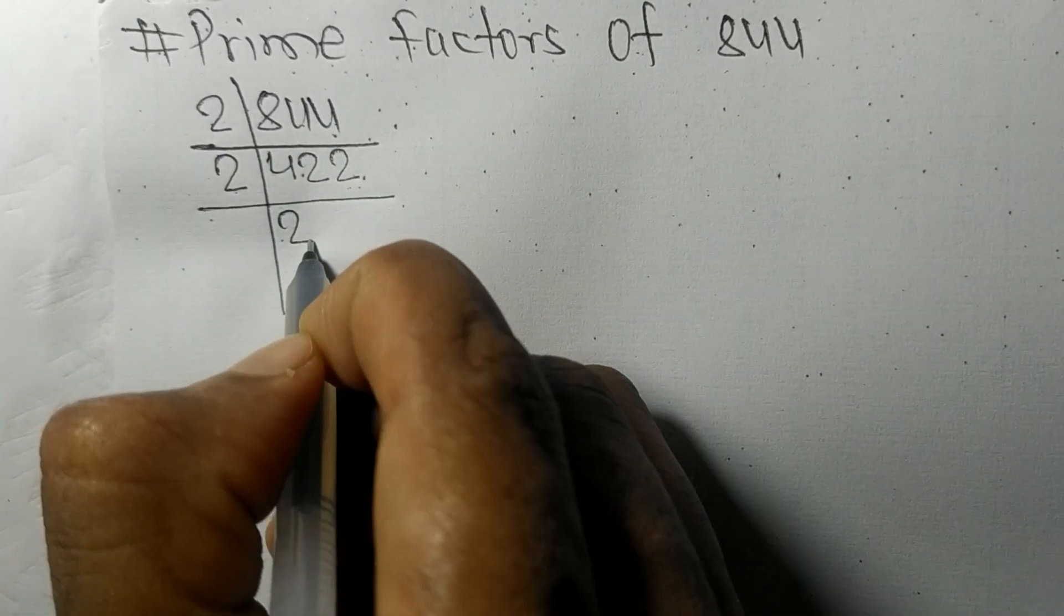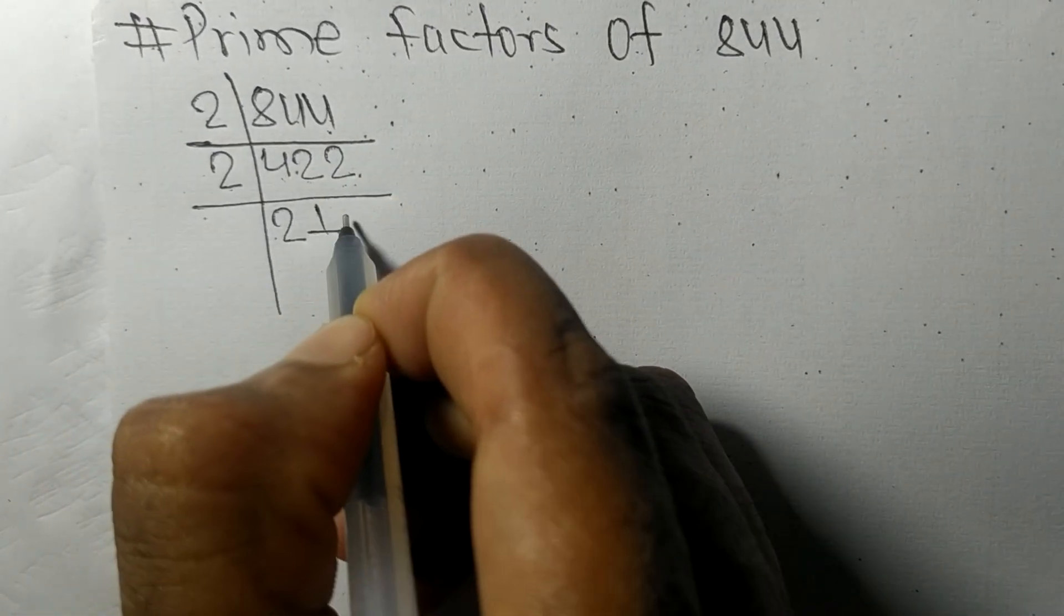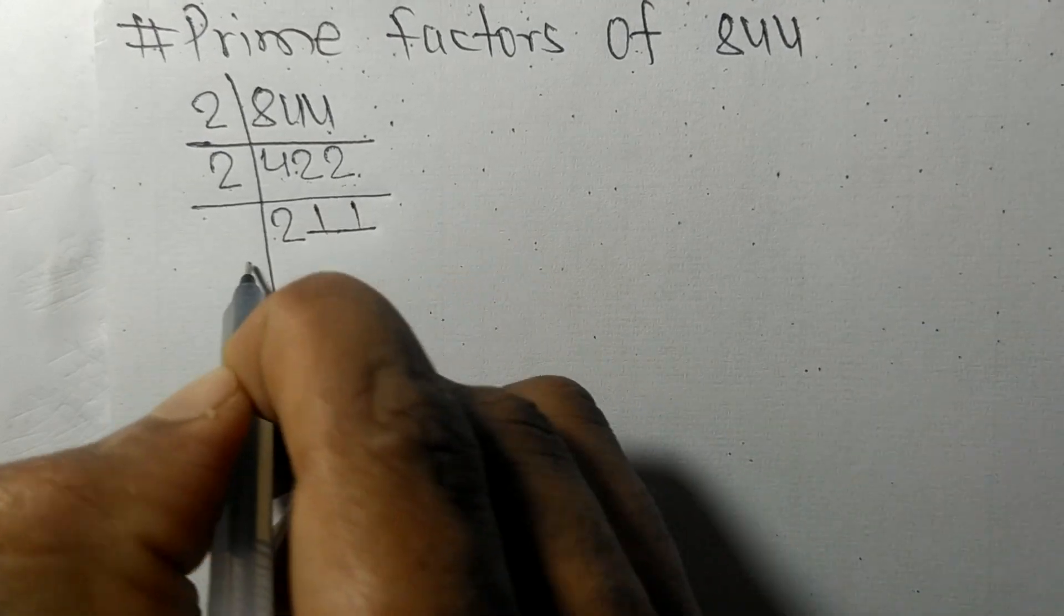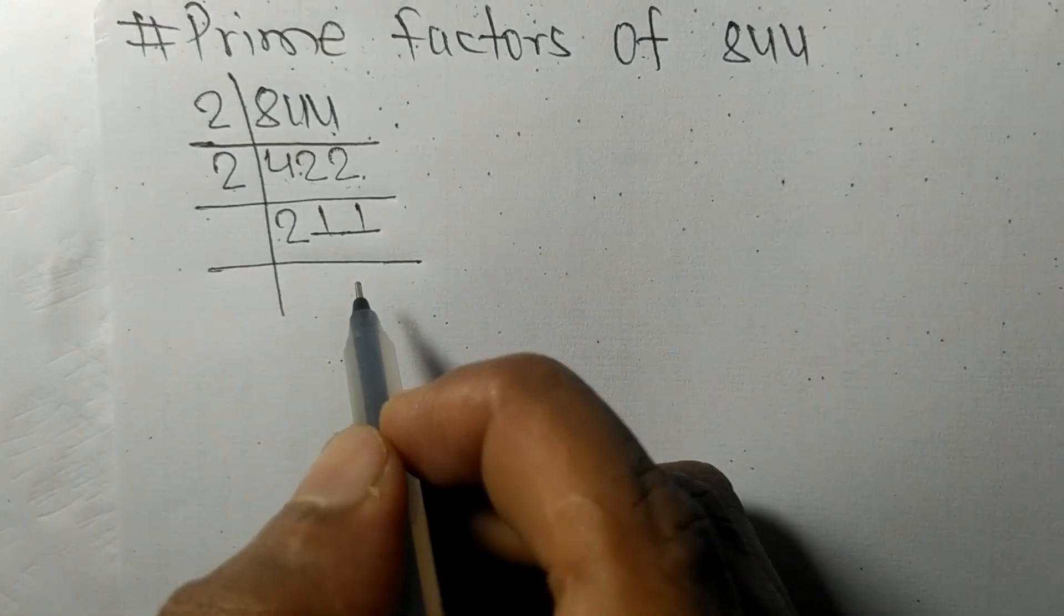2 times 2 means 4, 2 times 1 means 2, 2 times 1 means 2. So now we got 211.